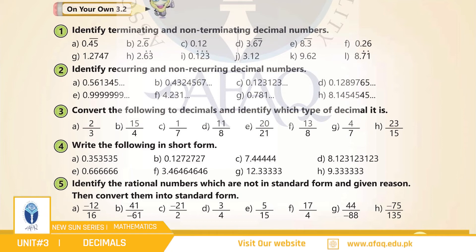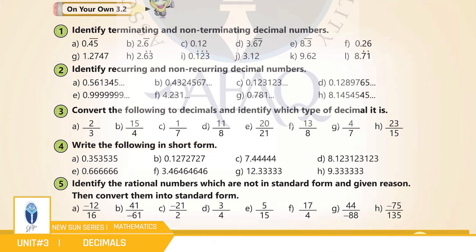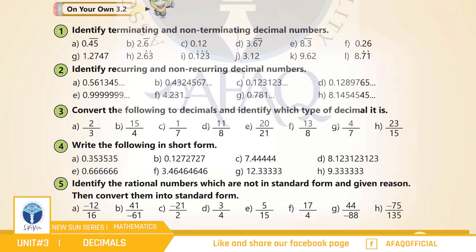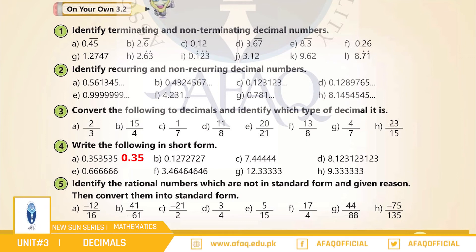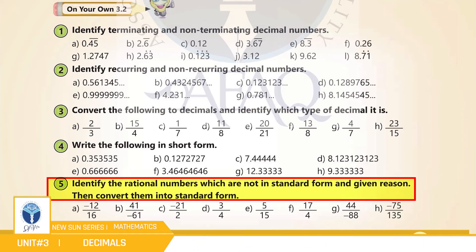باقی parts آپ نے خود حل کرنے ہیں۔ Question number 4: Write the following in short form. (a) 0.353535 — اس کا short form ہوگا 0.3̄5̄ (0.35 with recurring notation)۔ اسی طرح سے اگلے parts آپ نے خود حل کرنے ہیں۔